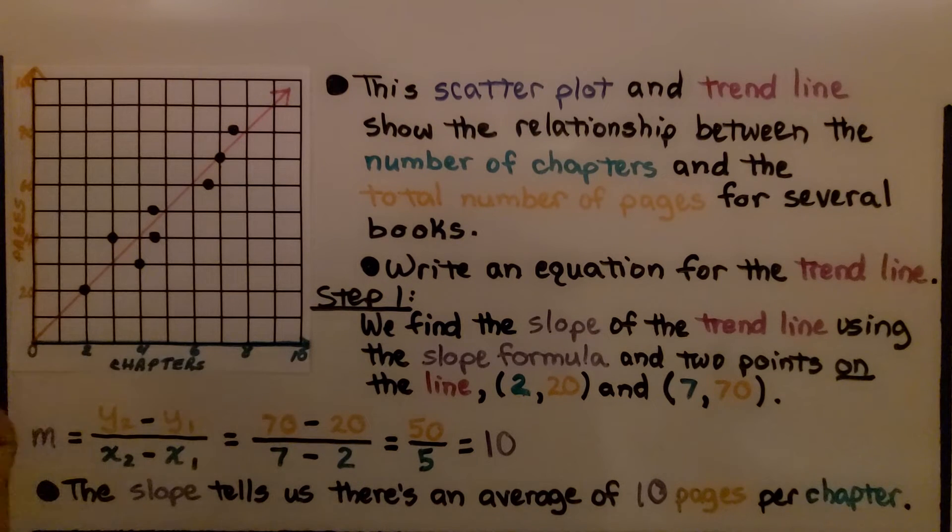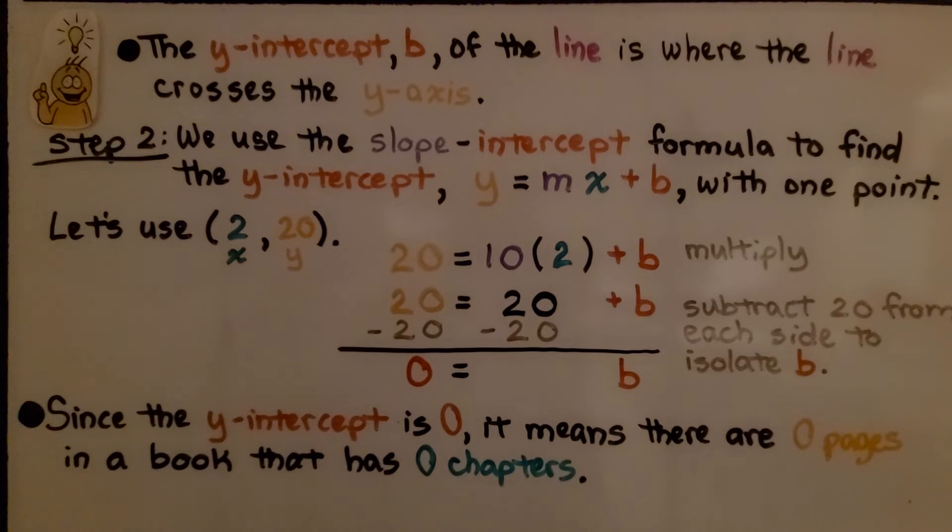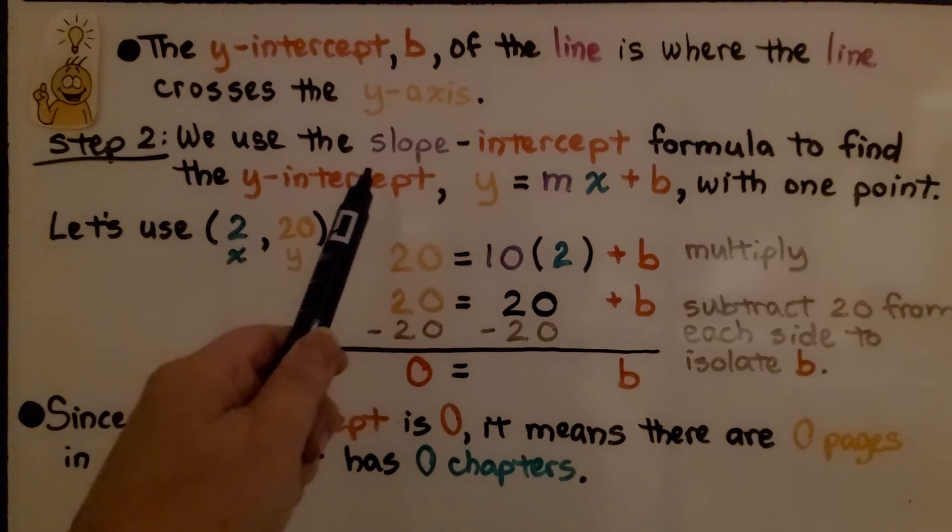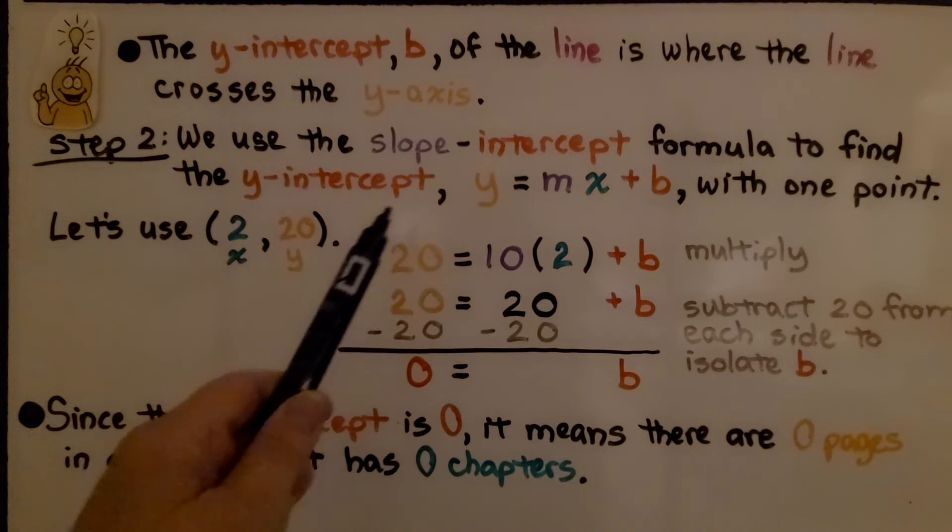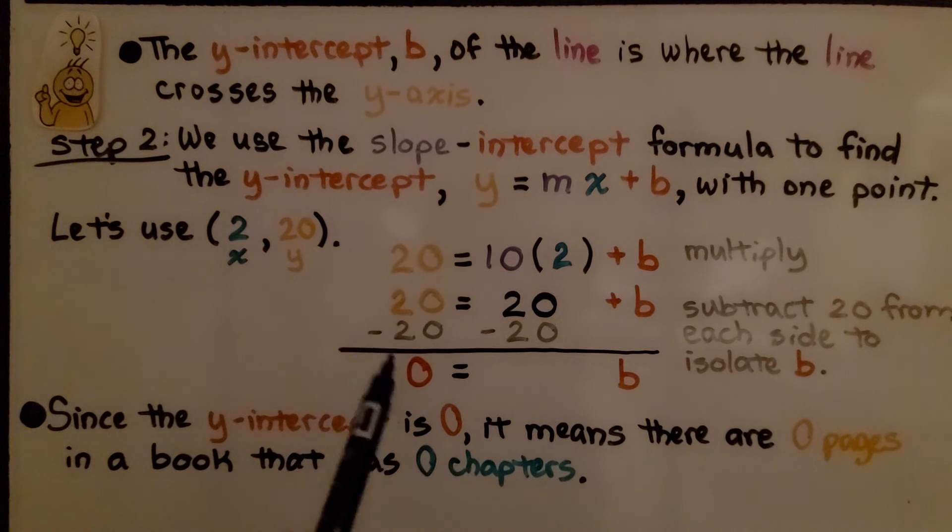After we did step 1, we could just look at the trendline and see that it intersects. The line intersects the y-axis at 0. So that would be our y-intercept b at 0. But it's useful to use the slope-intercept formula to find the y-intercept b when we're not sure if it's 0 or some other number.